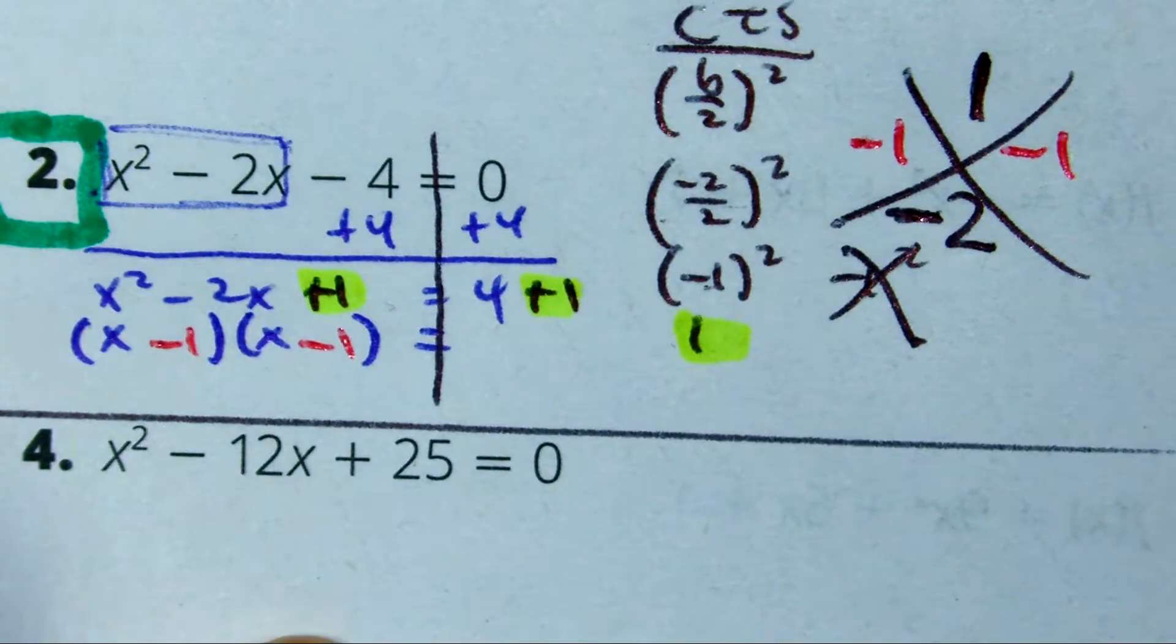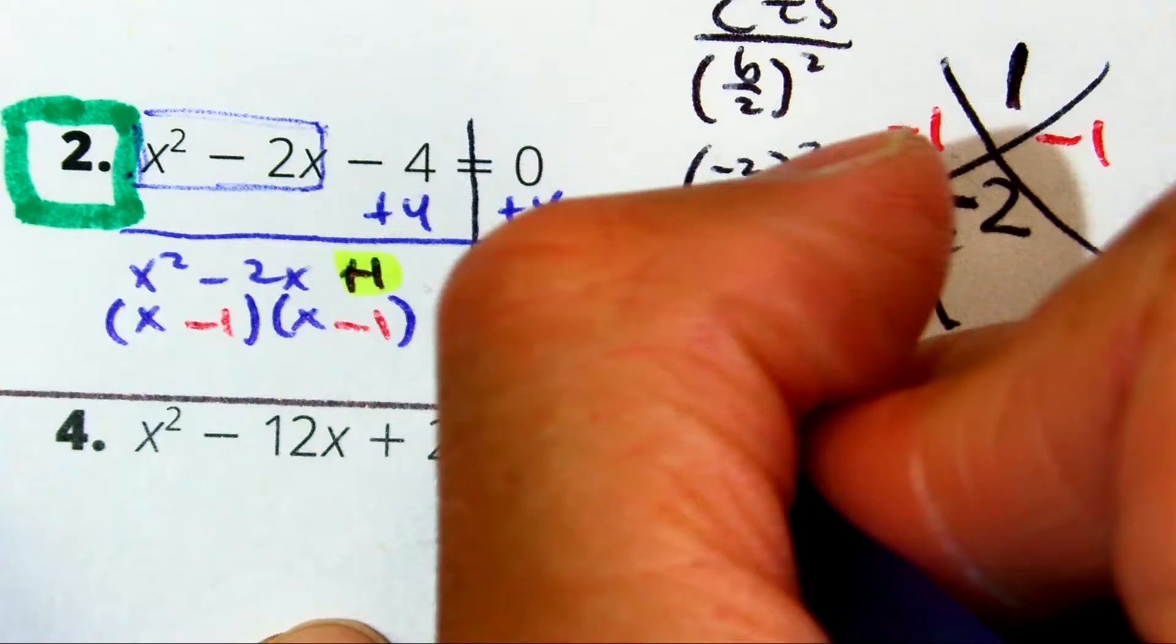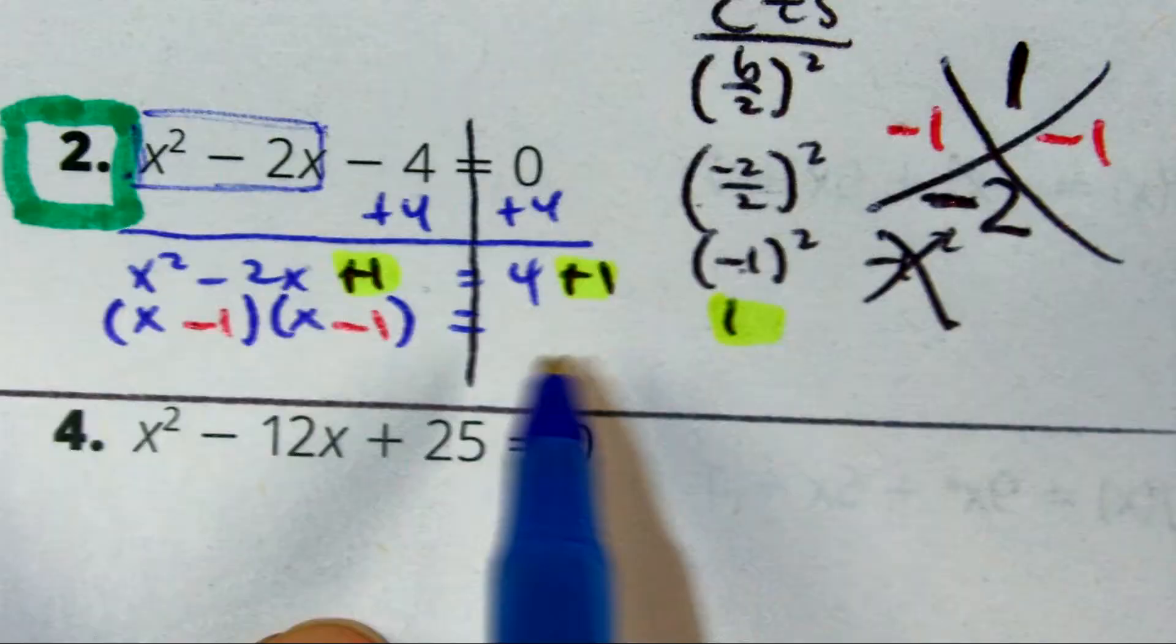And then 4 plus 1, Tony, is? 4 plus 1 is? 5.